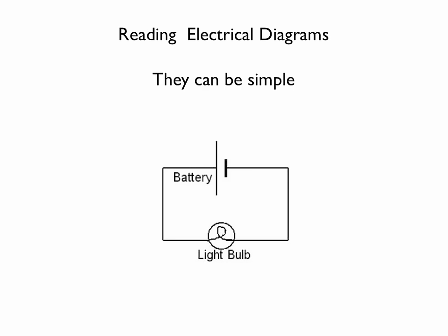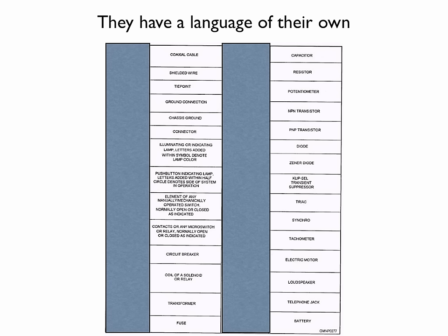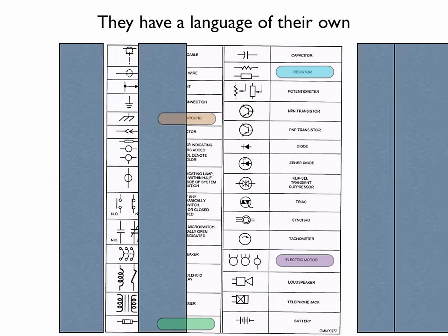Reading an electrical diagram, they can be pretty simple or they can be complex and they've got a language of their own. We normally talk and use words as you read here for the word resistor, chassis ground, electronic motor or fuse. When I say those words something comes to mind, you have an image of what's going on.